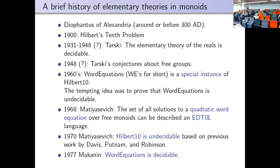Tarski's result is really remarkable: constants are the rationals, you have addition, multiplication, and the predicate 'less than,' and you can still decide the theory. It's a real breakthrough. The modern proofs can be lectured in two hours — the deep insight is something like the intermediate value theorem: if a polynomial has positive and negative values, it must be zero somewhere. Tarski also conjectured that the elementary theory of free groups is decidable.